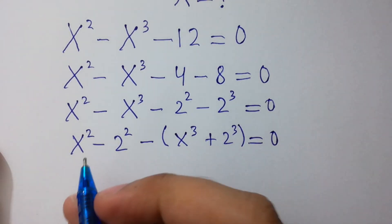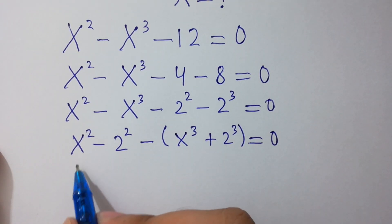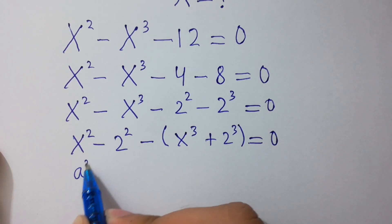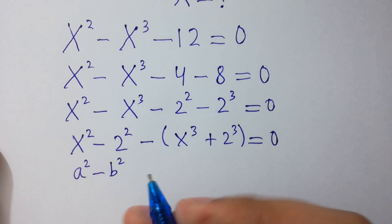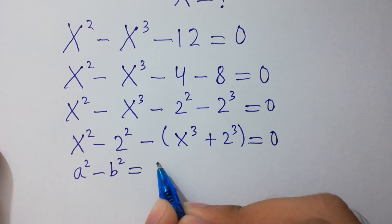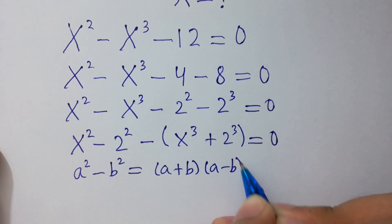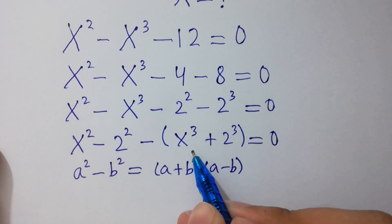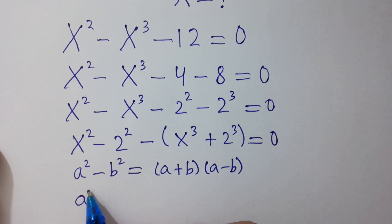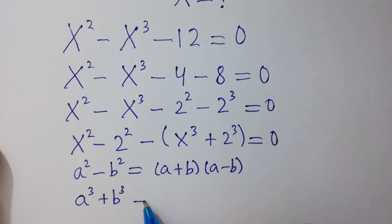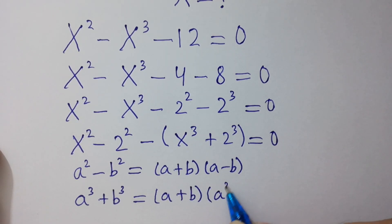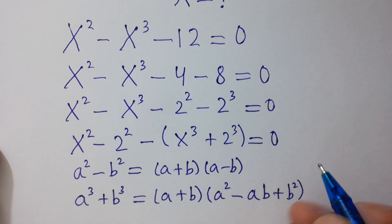The next step is very simple. As we know that a squared minus b squared equals (a plus b)(a minus b), and a cubed plus b cubed equals (a plus b)(a squared minus ab plus b squared).